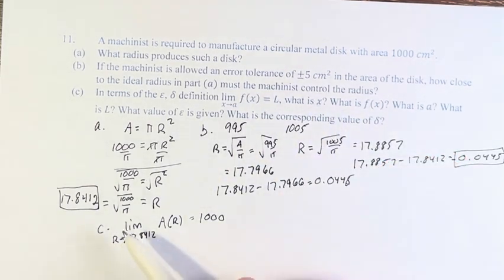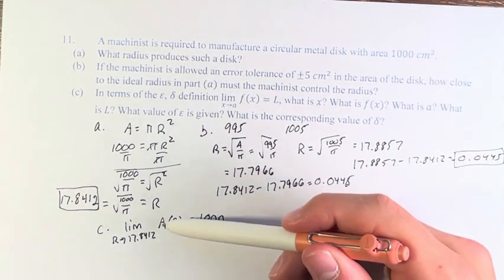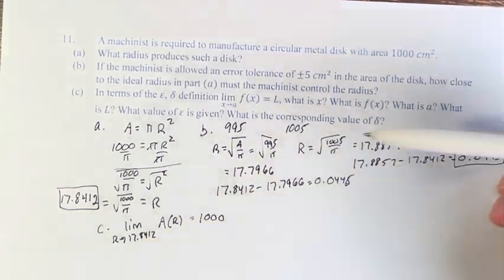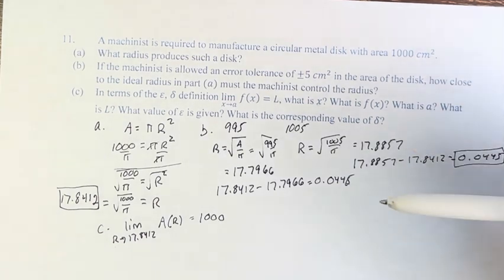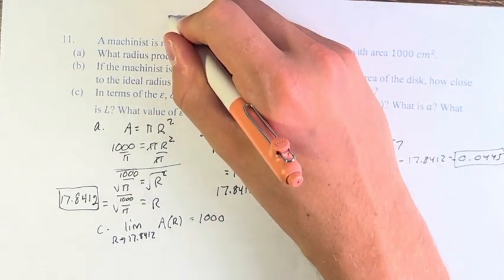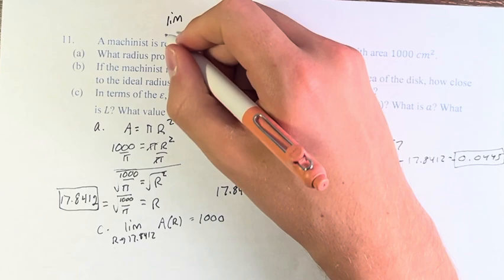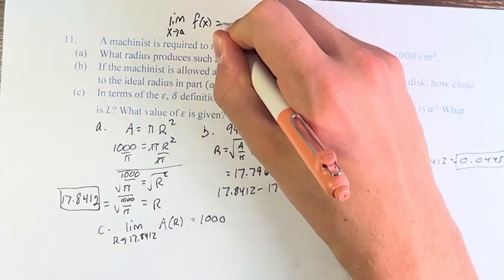So, x is R. F of x is A of R. So, that's the radius in the area. A is the value that it is approaching. So, I'll actually just write out the definition of the limit. So, it is the limit as x approaches A of f of x equals L.